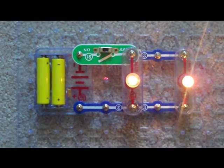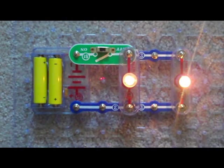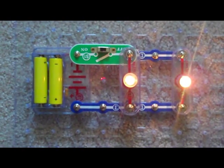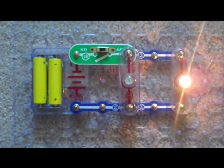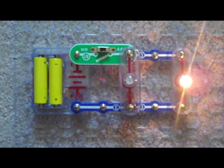In a parallel circuit, the electricity flows in two or more paths. If the electricity is interrupted in one path, the electricity can continue to flow through the remaining path.